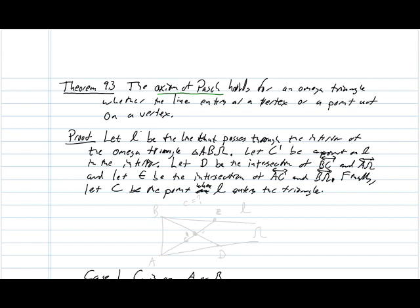Remember, an omega triangle is three lines with vertices A and B, where two of the lines that are of infinite length are parallel to one another. So the idea with this proof is that we're going to let C prime be some point on the interior of the triangle through which a line L passes.